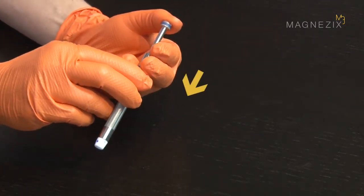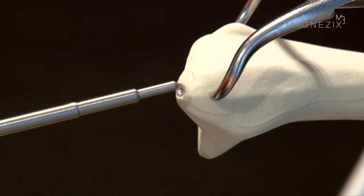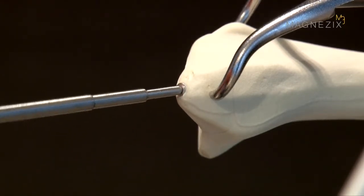Gently press the impactor insert to make the Magnesix PIN appear at the impactor tip. Only the impactor insert is used for the last few millimeters of the insertion process.